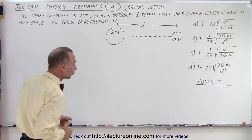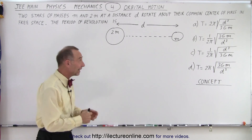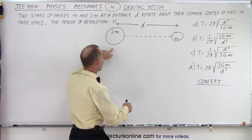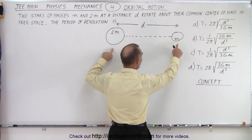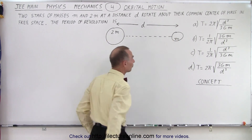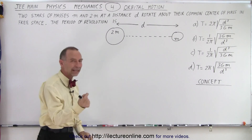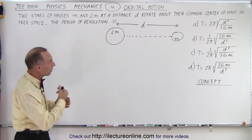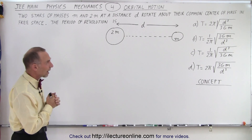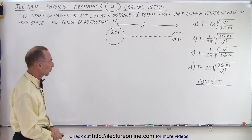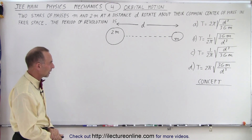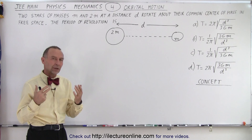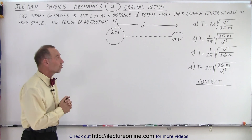They give us four possible answers and a little diagram. We have two masses, one that has 2m and one that has m, their distance d apart, and they revolve about their common center. So what is the concept here, and what would be the strategy?